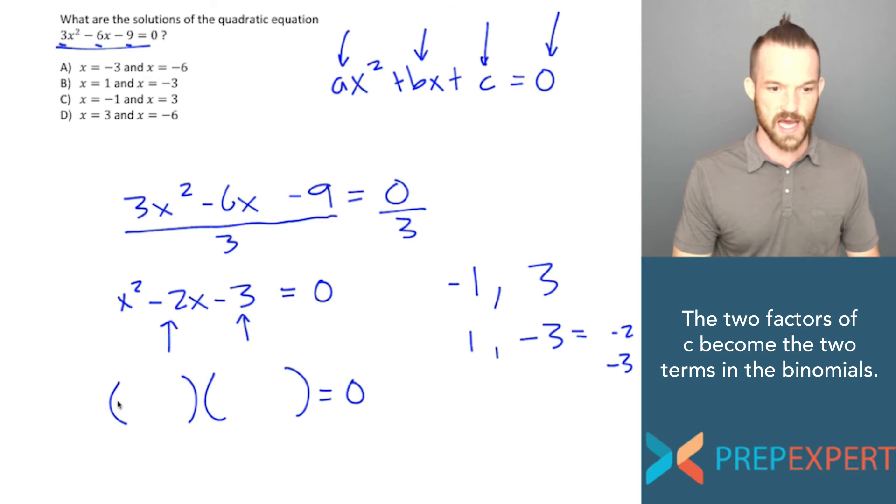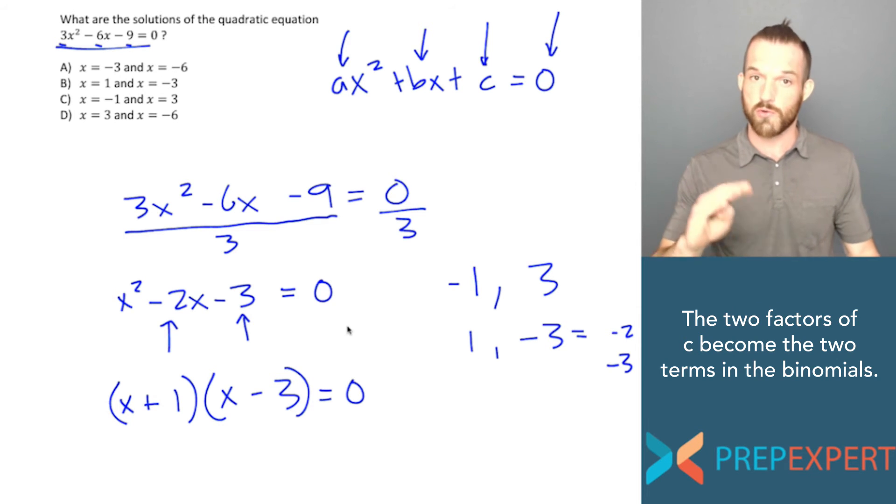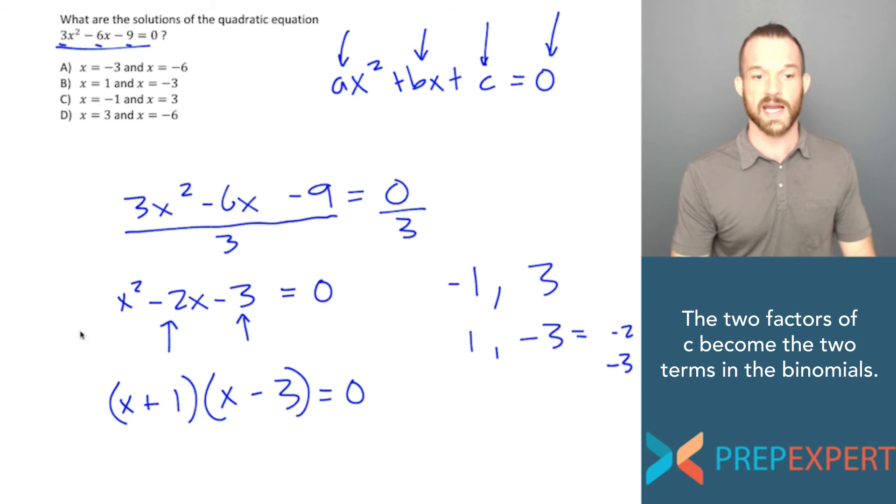So those two factors that I have found become the second term in the two binomials that I now write out as factors of the quadratic. These binomials look like this. x plus 1, because that's a positive 1 as a factor, and x minus 3. Because negative 3 is a factor. And what you would find if you were to reverse this process and foil these two binomials back into a quadratic is that we'd get the exact same quadratic we started out with. Positive 1 times negative 3 is negative 3, and positive 1 plus negative 3 is negative 2. So there is my factored quadratic.